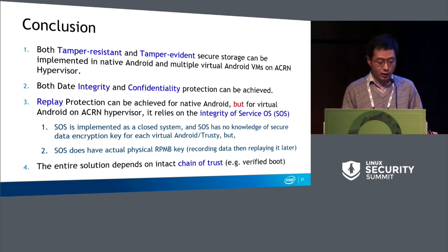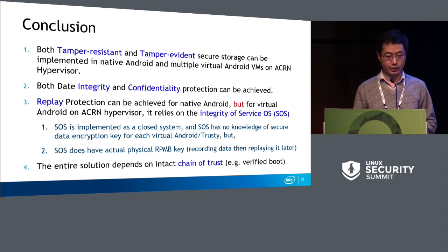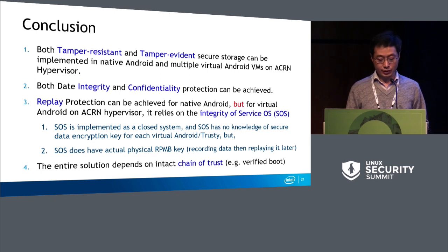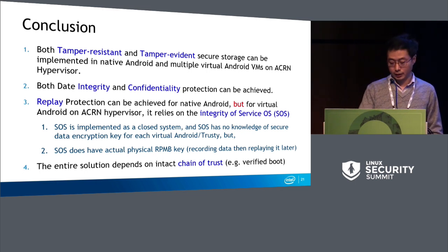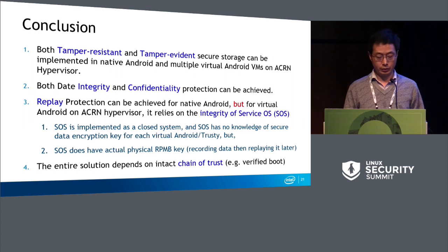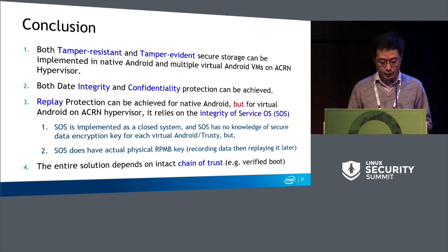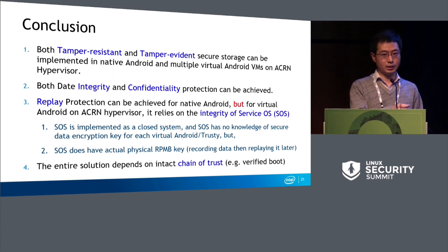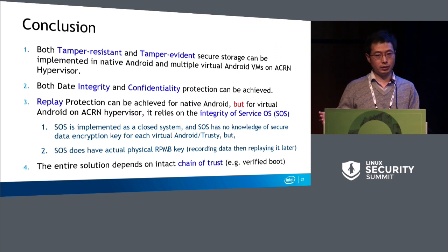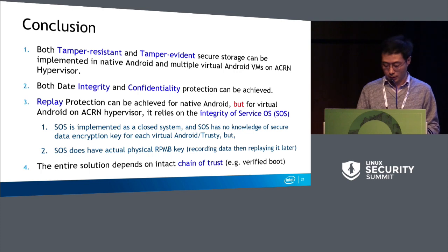The reason is that although the Service OS is a closed system with no knowledge of the secure data encryption key for each virtual Android VM, the Service OS does have access to the physical RPMB driver. If it is compromised, it can record data and then replay it, and the virtual Android guest won't know. This is one area of enhancement we need to address in the future. Also, the entire solution depends on verified boot and the chain of trust — firmware starts the hypervisor, hypervisor starts the Service OS, Service OS creates the device module to create each Android OS. We need a trust chain throughout this flow.